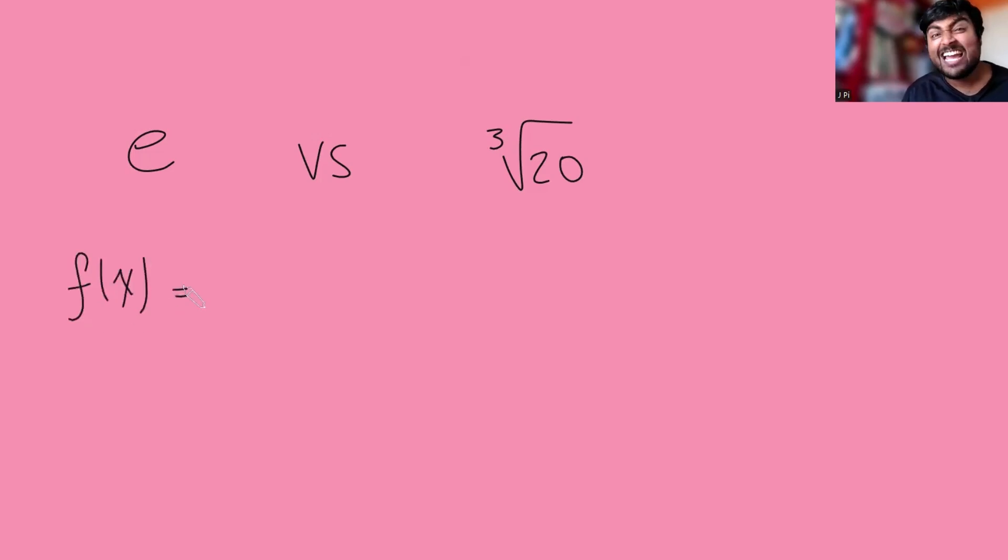What we're going to do is start by considering this function f(x), and it's just going to be 1 over 186 times (x-1) squared times (x-2) to the 4 times e to the x.